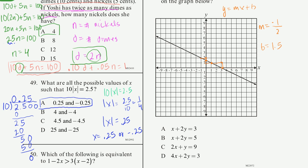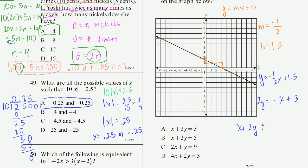So the equation is y = −½x + 1½. That doesn't match the answer choices directly, so we multiply both sides by 2: 2y = −x + 3. Then adding x to both sides gives x + 2y = 3. That is choice A, which is completely equivalent to our equation.